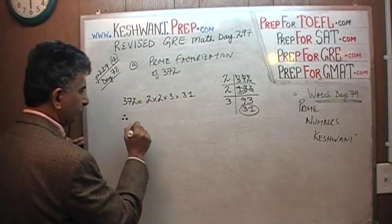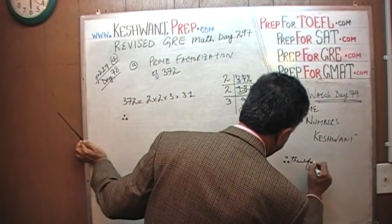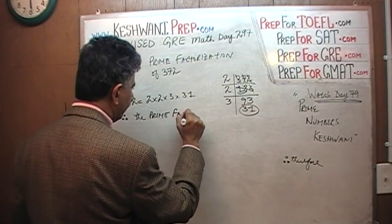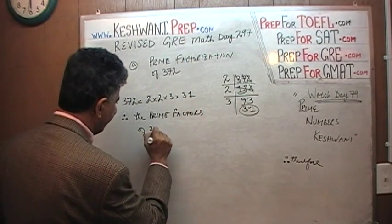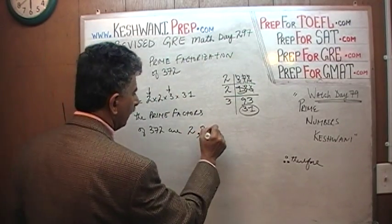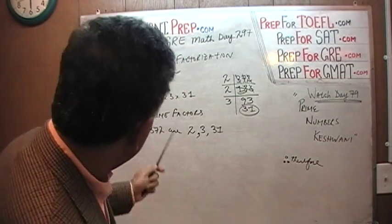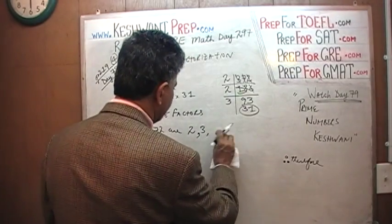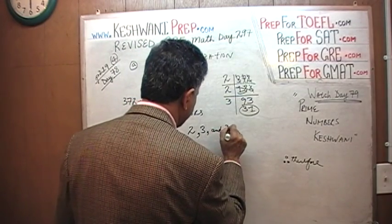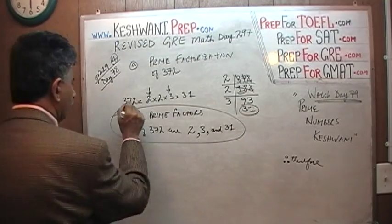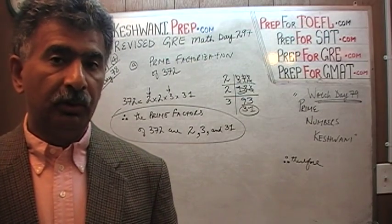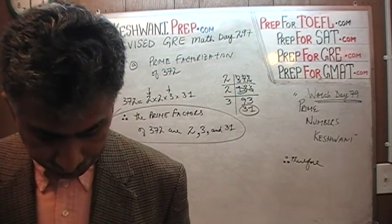So, in other words, 372 can be written as 2 times 2 times 3 times 31. Therefore — and this symbol means 'therefore' — the prime factors of 372 are 2, 2, 3, and 31. If something repeats, we don't count it twice, so it only has 3 unique prime factors: 2, 3, and 31. That's what they mean by prime factorization — we've factorized it, broken it down, chopped it into its prime factors. It cannot be broken down anymore.